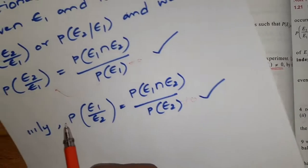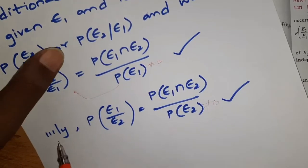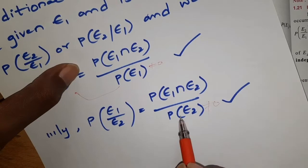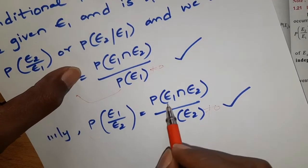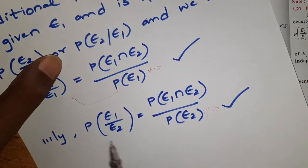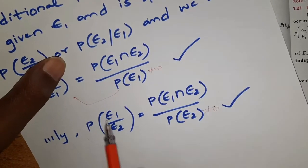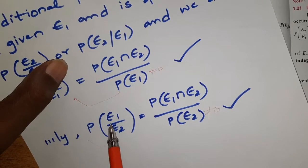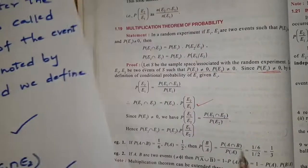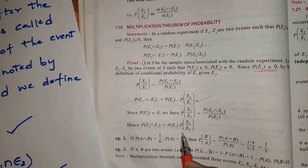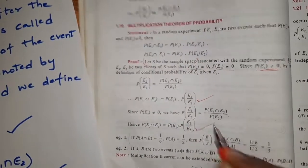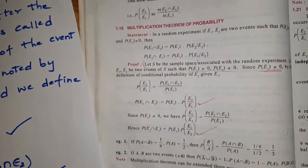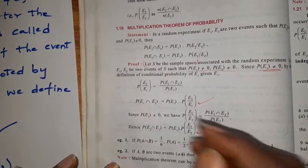Similarly, P(E1 ∩ E2) = P(E2 ∩ E1) = P(E2) · P(E1|E2). This completes the proof of the multiplication theorem. So we have two important formulas from the multiplication theorem.